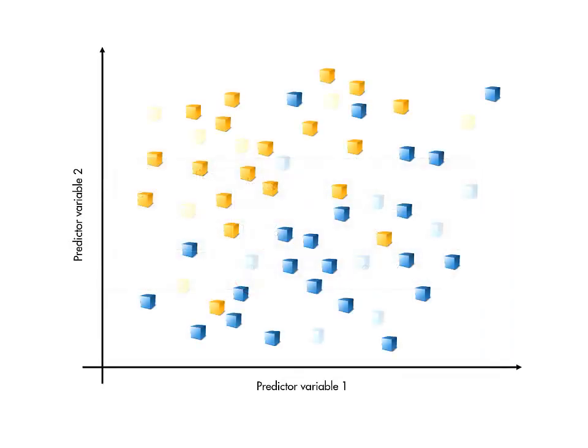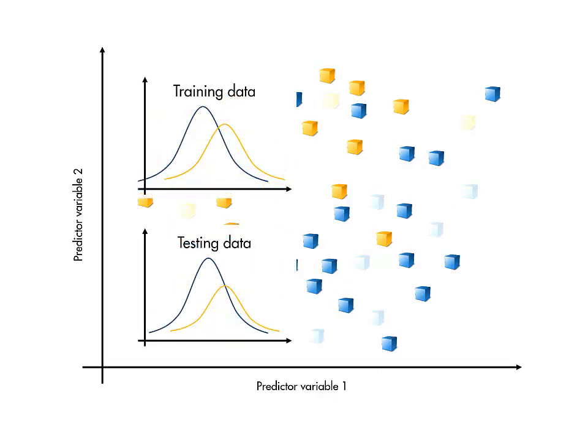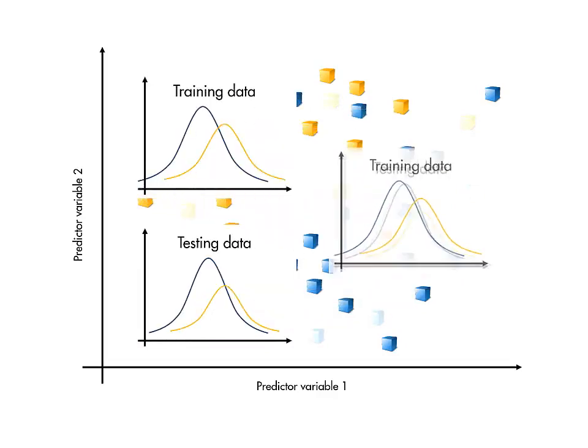Note that this approach of splitting the data into training and validation sets works best if there are enough observations that both sets are statistically representative of the whole set.